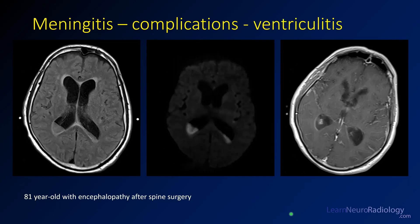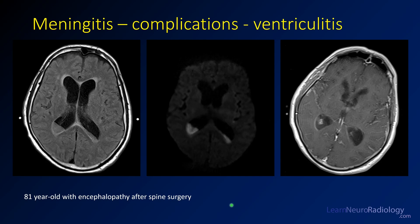Another complication of meningitis is ventriculitis, where pus spills into the ventricle. On FLAIR you see material collecting in the dependent portions of the ventricle with non-suppression in both the right and left occipital horns. On diffusion that material is hyperintense, with some material in the sylvian fissure. On post-contrast imaging there is a thin rim of enhancement around the ventricle. This patient had encephalopathy after spine surgery, developed a post-surgical infection that spread to the brain causing ventriculitis and meningitis. Ventriculitis is a severe complication with very high morbidity and mortality.